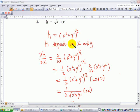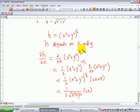So h depends on x and y. Now if x changes, then we know h will also change, so we can find ∂h/∂x.